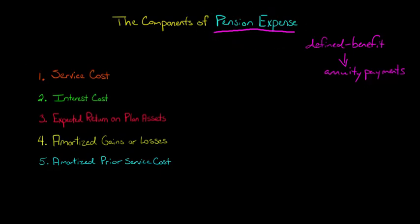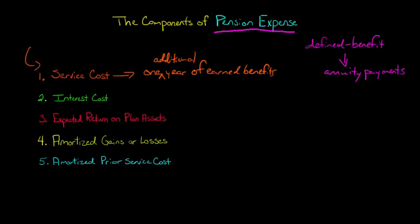The first component is called service cost. Service cost is basically the additional pension benefits that were earned by employees in the prior year of having worked — one additional year of earned benefits. If you're an accountant, this is typically going to be given to you by an actuary. You could calculate it yourself using the time value of money to discount the future payouts, but we'll cover that in another video.